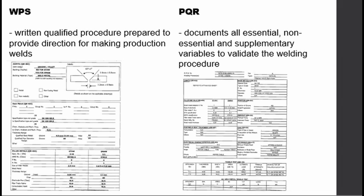Both the WPS and PQR list the base metal, the filler metal, the electrode classification, the welding current, and the voltage properties of the welding machine, among others. But what they differ in is that the WPS is the specification used to create the weld, while the PQR lists all the parameters used during the qualification of that weld. That's a major difference between the two.